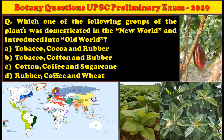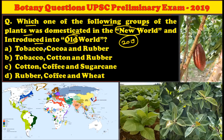So let's get started. Now let's consider this question which is part of your 2019 UPSC preliminary examination question paper: which one of the following groups of plants were domesticated in the new world and introduced into the old world? That is, we have to identify the plants from the following options that are domesticated in the new world and later introduced into the old world.